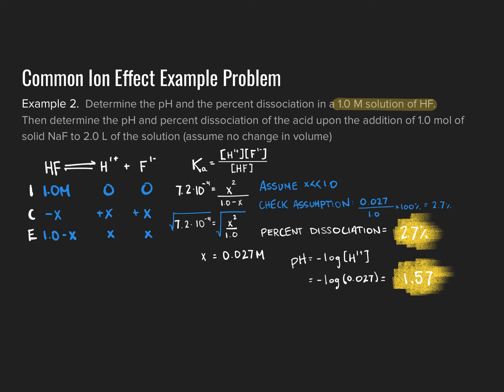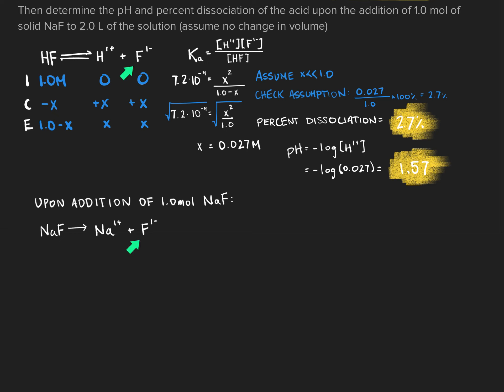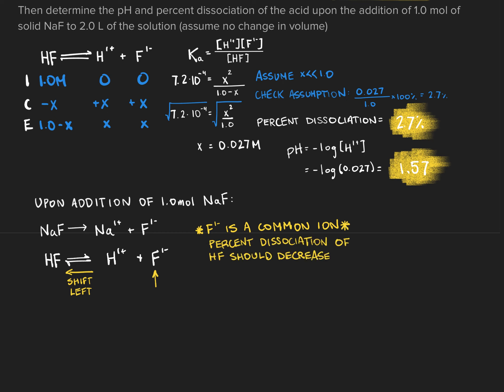Now we consider adding 1.0 mole of solid sodium fluoride to 2 liters of that solution. Thinking qualitatively first: NaF is a soluble salt that dissociates completely into Na⁺ and F⁻ ions. The F⁻ is a common ion to the HF dissociation equilibrium. My prediction is that the increased fluoride concentration will shift the acid dissociation equilibrium to the left, resulting in lower percent dissociation and higher pH.